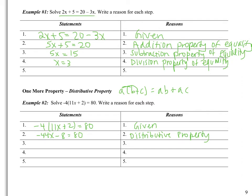I'm trying to isolate X, so now I want to add 8 to both sides. When I do that, I'm left with negative 44X on the left side and 88 on the right side. So that was the addition property of equality. Last thing: I want to divide by negative 44. When I divide the left side by negative 44, I'm left with just X. When I divide 88 by negative 44, I get negative 2. So that was the division property of equality.